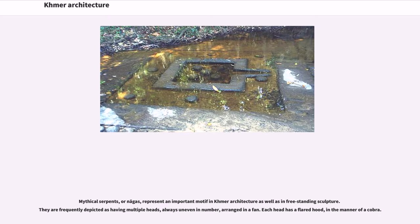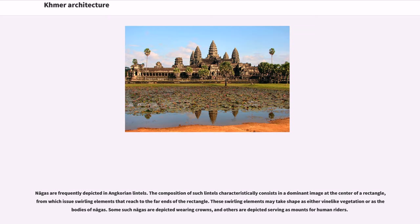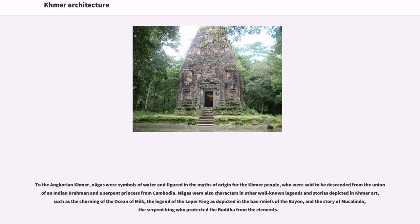Nagas, these mythical serpents, represent an important motif in Khmer architecture as well as in freestanding sculpture. They are frequently depicted as having multiple heads, always uneven in number, arranged in a fan, with each head having a flared hood in the manner of a cobra. Nagas are frequently depicted in Angkorian lintels, with a dominant image at the center of a rectangle from which issue swirling elements that reach to the far ends — taking shape as either vine-like vegetation or as the bodies of nagas. To the Angkorian Khmer, nagas were symbols of water and figured in the myths of origin for the Khmer people, who were said to be descended from the union of an Indian Brahmin and a serpent princess from Cambodia. Nagas were also characters in well-known legends depicted in Khmer art, such as the churning of the ocean of milk, the legend of the leper king, and the story of Mucalinda, the serpent king who protected the Buddha from the elements.